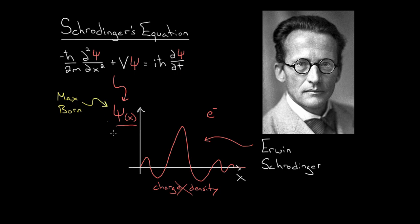Max Born said, don't interpret it as the charge density. What you should do is interpret this psi as giving you a way to get the probability of finding the electron at a given point in space. Max Born said, if you find your psi, go ahead and use Schrödinger's equation. Use it. Get psi.